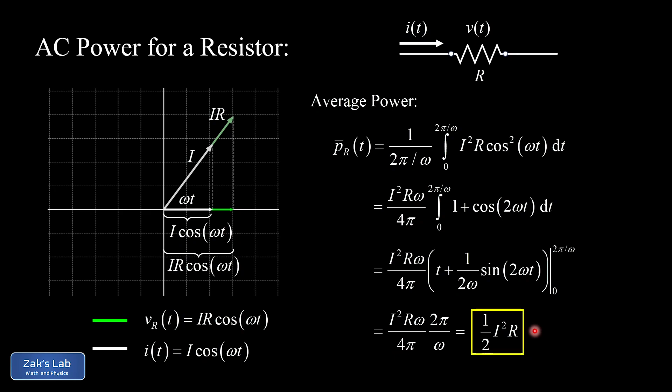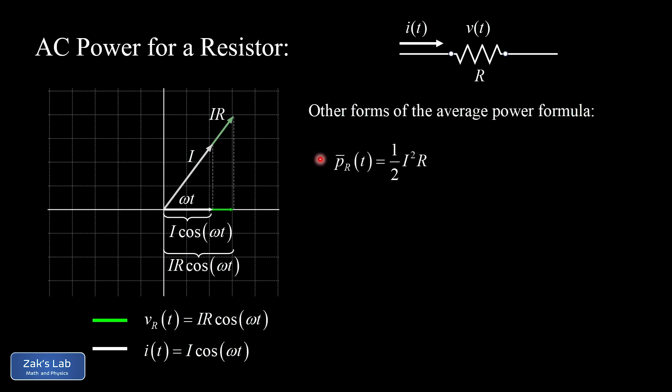After cancellations — a factor of 2π and a factor of ω cancel — the average power works out to ½·I²R. This result has alternate forms worth knowing. Since the voltage amplitude across the resistor is V = IR, we can re-express the average power in terms of the voltage amplitude as ½·V²/R. You can verify this by substituting V = IR back in, where one factor of R cancels.